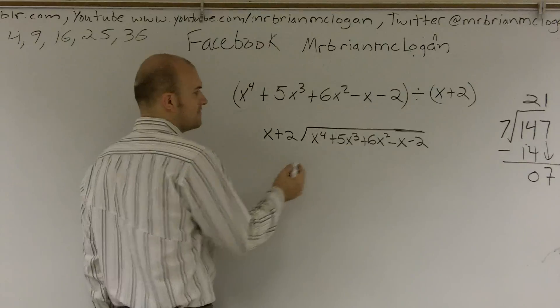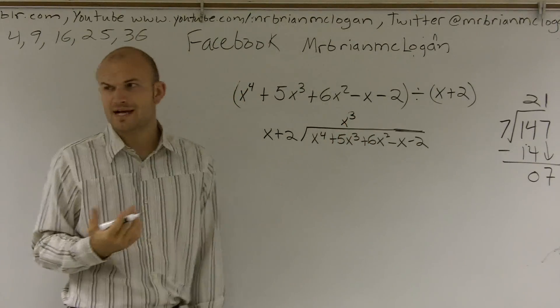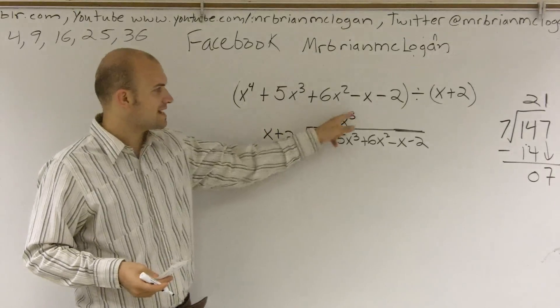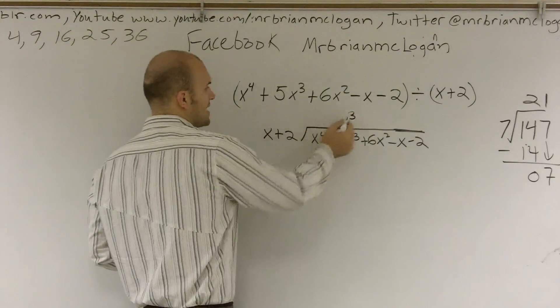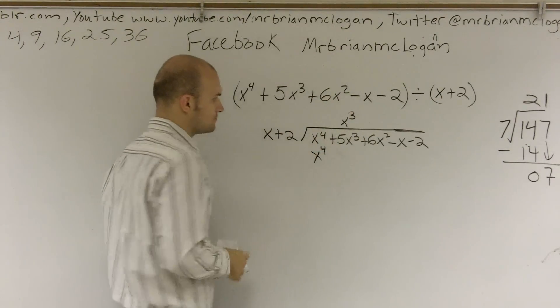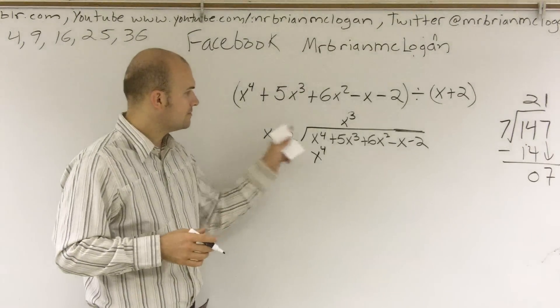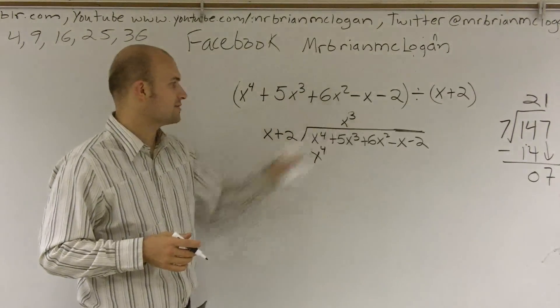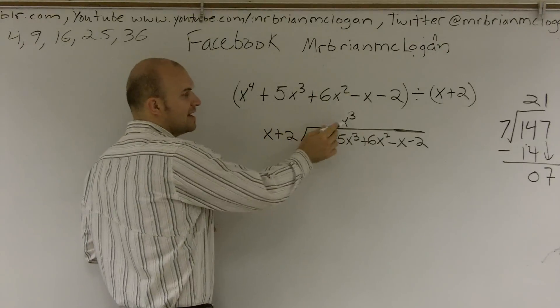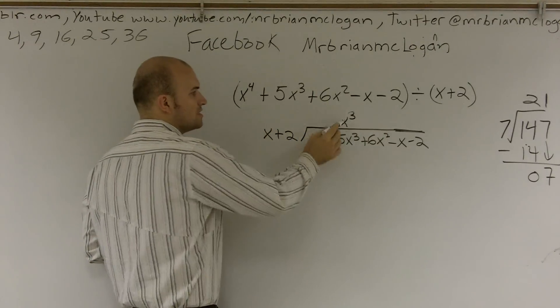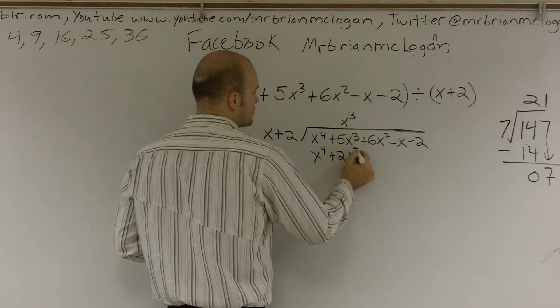So I say x goes into x to the 4th. We say it's going to go into x cubed times. But what do I mean it goes into x cubed times? Well, if I do x times x cubed, I'm going to get back x to the 4th. So I do x cubed times x, and I get x to the 4th. All right, so you want to see what you can divide back in there. It goes x cubed times. Now, you've got to make sure that when you multiply, you multiply the x cubed times x, and also the x cubed times 2. So x cubed times 2 is going to give me 2x cubed.